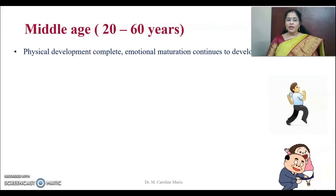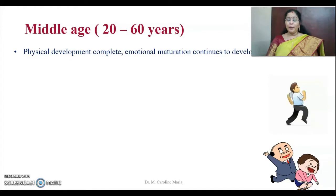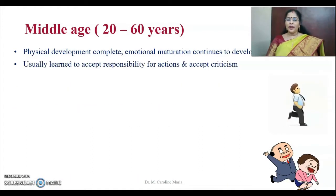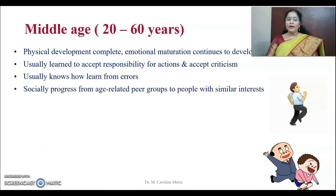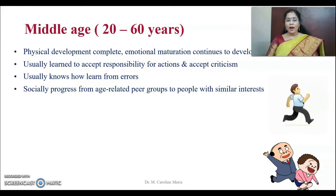The next stage is middle age, where physical development is almost complete and emotional maturity continues. They learn to accept their responsibilities, their actions, and even criticism. Unlike adolescents who defend themselves against criticism, middle-aged people accept criticism, learn from their errors, and learn from experiences. They also progress from age-related peer groups to groups of people who share similar interests.